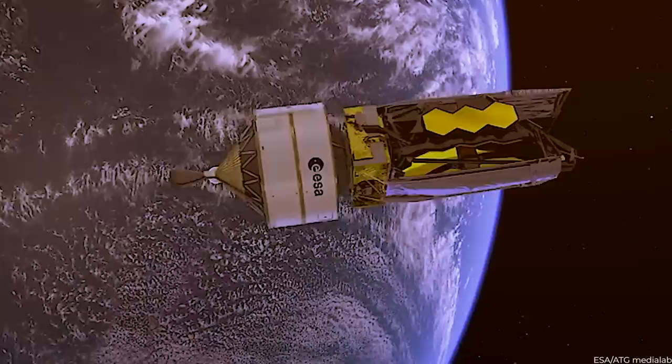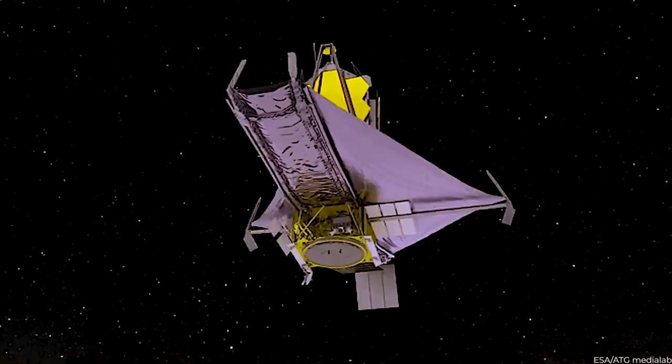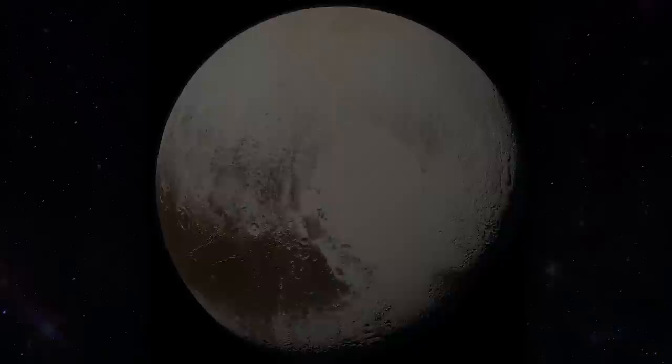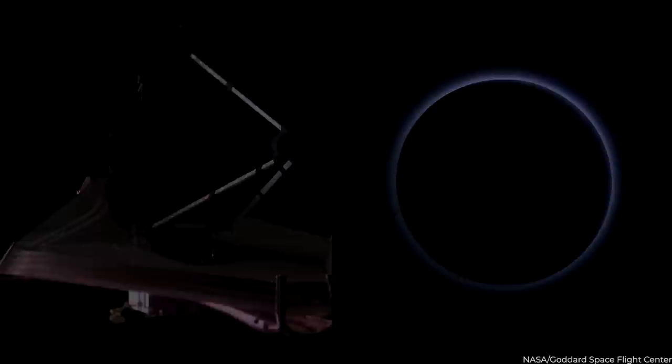While the JWST is not explicitly designed to study a particular planet, it has just captured the most precise image of Pluto ever. This was made possible by the telescope's infrared capabilities, which allow it to see through the haze in Pluto's atmosphere. According to NASA, these images reveal new details about the dwarf planet's surface.